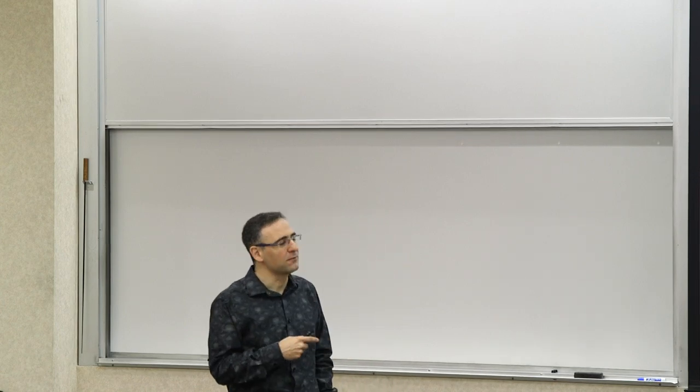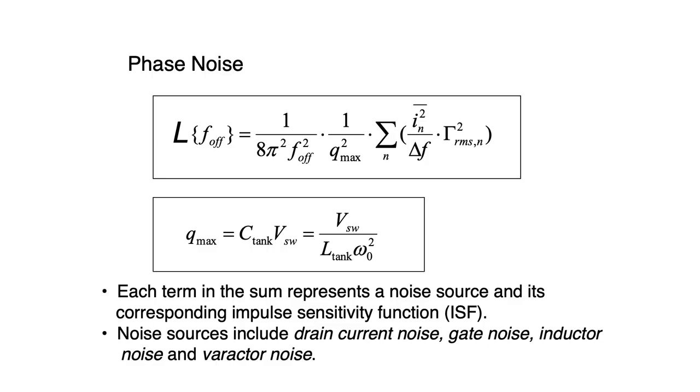Now, if you remember the expression for phase noise that we have, if you rewrite it here, what you see is we had Q_max squared in the denominator. And you have also the F_offset, and then you have sum of all the currents. Now Q_max, the maximum charge swing, lower Q_max, not the quality factor which is the uppercase Q, this is the charge swing. It's basically the capacitance of the tank times the voltage swing. And you can also, since the frequency of oscillation is omega naught, you can actually write it as V, the voltage swing, divided by L_tank times omega naught squared.